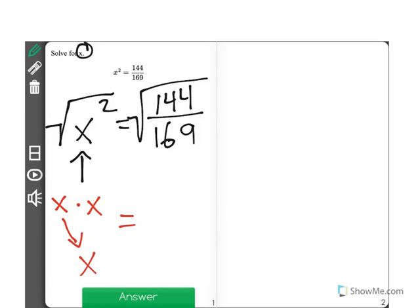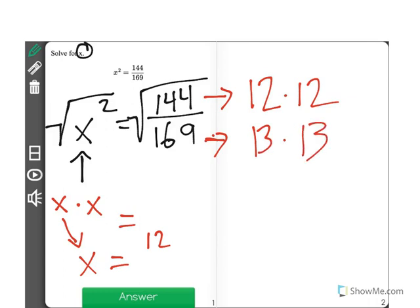Now, on the other side, we ask ourselves, what two numbers, when multiplied together, will equal 144? And remember, the numbers have to be the same. I know that 12 times 12 is 144, so that means that the square root of 144 is 12. And for 169, it is 13 times 13. So, that means that x is equal to 12 over 13.